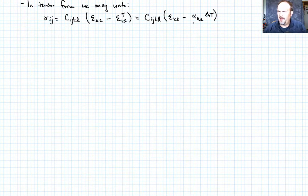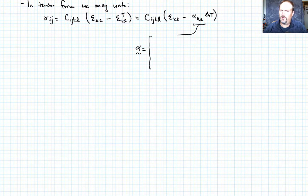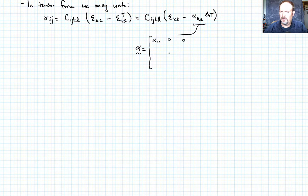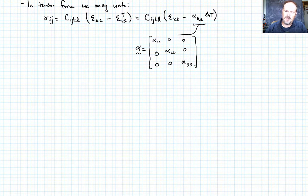If we write out what alpha looks like, typically for thermal expansion we only talk about normal components, so it's a 3×3 tensor with alpha_11, alpha_22, alpha_33 on the diagonal and zeros elsewhere. That's how we handle the thermal expansion coefficient tensor.